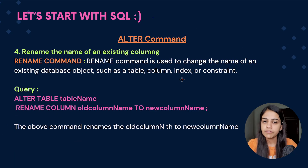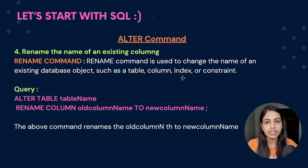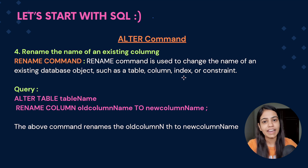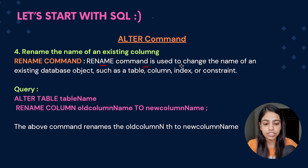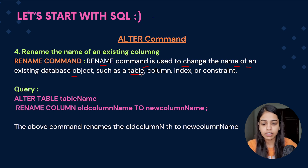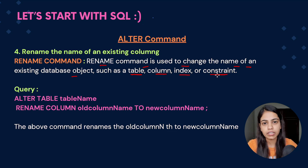So in this way using the ALTER command we can change the column name. This was one way to rename a column. There is one more way in which we can rename our table, column, constraints, and much more — that is using the RENAME command. The RENAME command is used to change the name of an existing database object such as a table, column, index, or constraint.